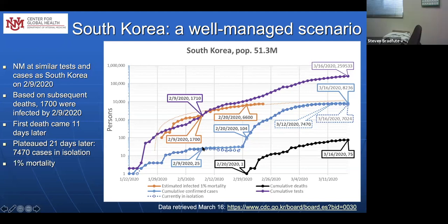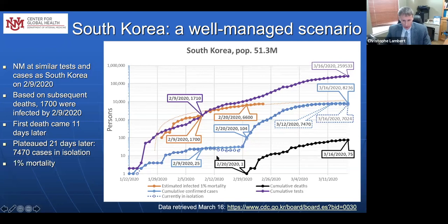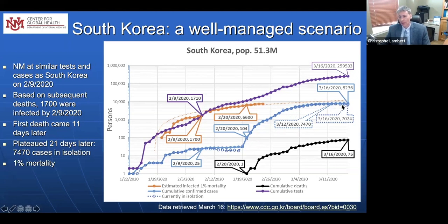Korea had a super spreader event that caused a dramatic acceleration. From that point, the first deaths appeared about 11 days later and plateaued 21 days later on March 12. There's a second curve here showing the active cases, and it's actually dropping on this logarithmic scale. On March 16, there were 8,236 total cases with 7,024 active, which is down from the peak of 7,470.